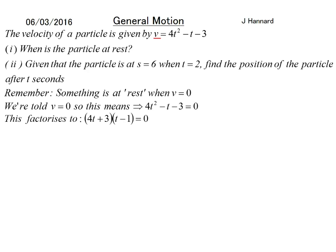4t² - t - 3 = 0 and we'll solve that. It factorizes. We've got (4t + 3) = 0 or (t - 1) = 0. So we know t equals -3/4 or 1.